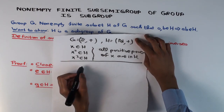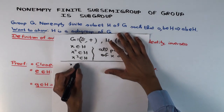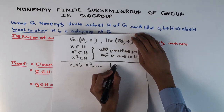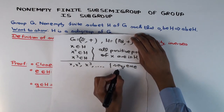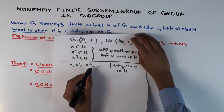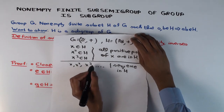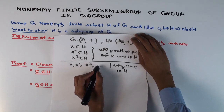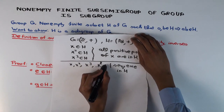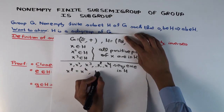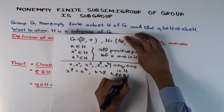We now have the sequence X, X squared, X cubed, ... all in H. We know H is finite. So what can we say about this infinite sequence? There must be some repetition, since there are only finitely many values it can take. So there exist positions L and K, both positive, with K greater than L, such that X to the L equals X to the K.